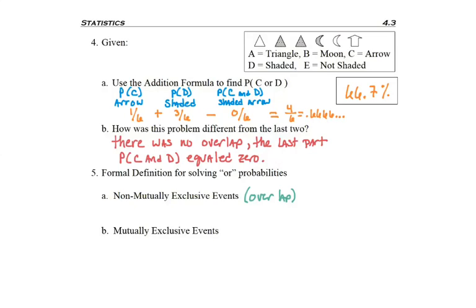But mutually exclusive is nothing in common. So if it's not nothing in common, there's some sort of commonality between the items. And the probability of A or B would be probability of A plus probability of B minus A and B at the same time.